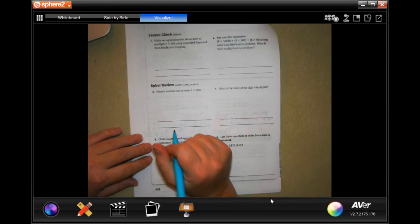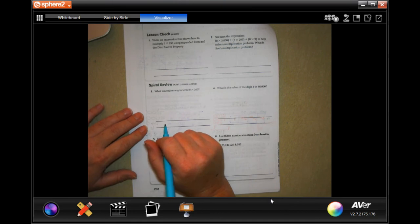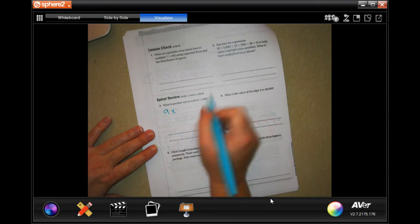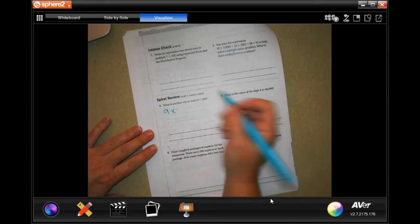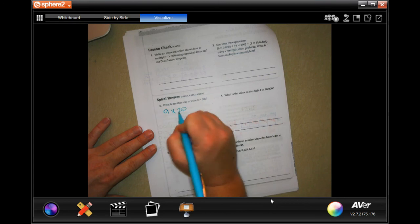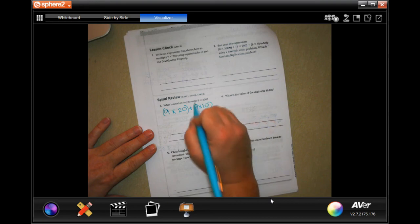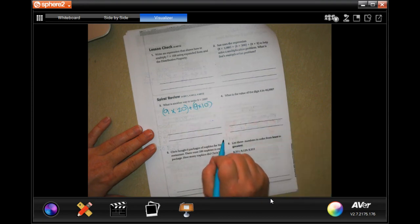Okay, so this says what is another way to write nine times 200 on spiral review. Okay, so nine times, we can do nine times 20 and we can do nine times 10, and that would be another way. There's our 20, and then with a zero we will multiply it by 10.